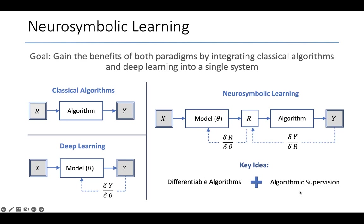What I mean by algorithmic supervision is that we are only given supervision on the X, Y pairs. And crucially, not on the intermediate result R.